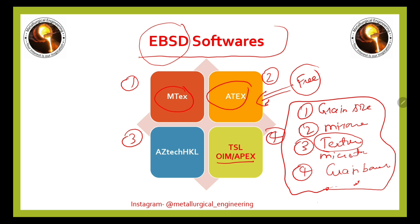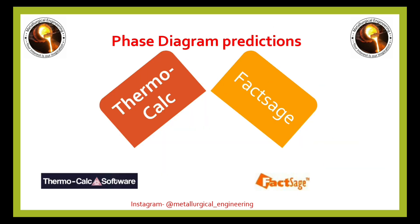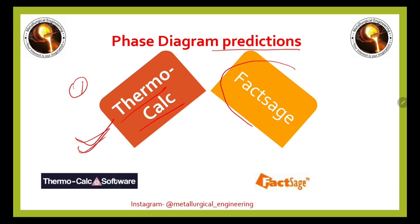You can get all these results from any of the four EBSD software tools, but importantly, MTEX and ATEX are freely available. For phase diagram prediction, there are mainly two software tools available: Thermo-Calc, which is the most widely used, and FactSage, which is also an important software that can predict phase diagrams.